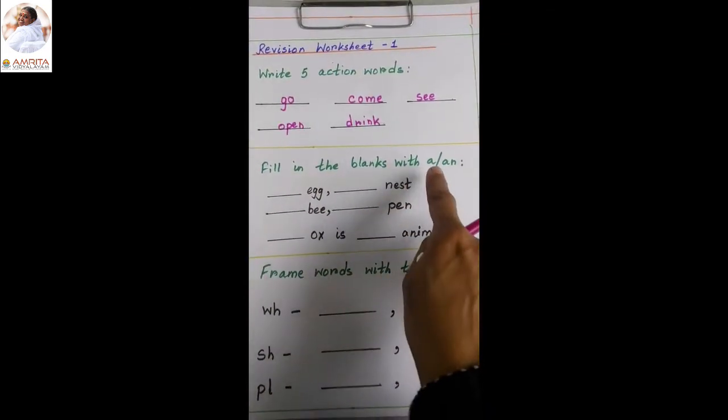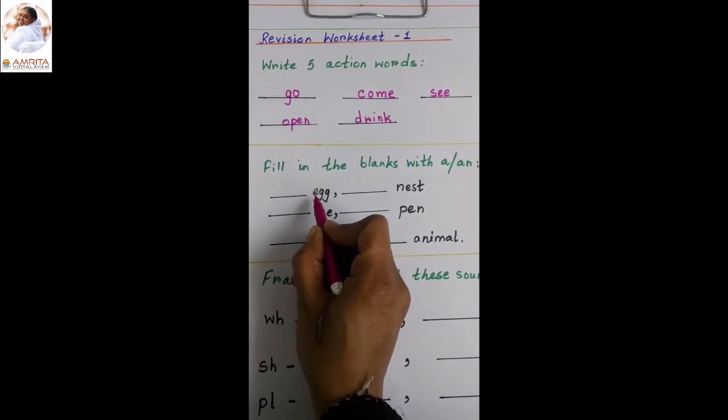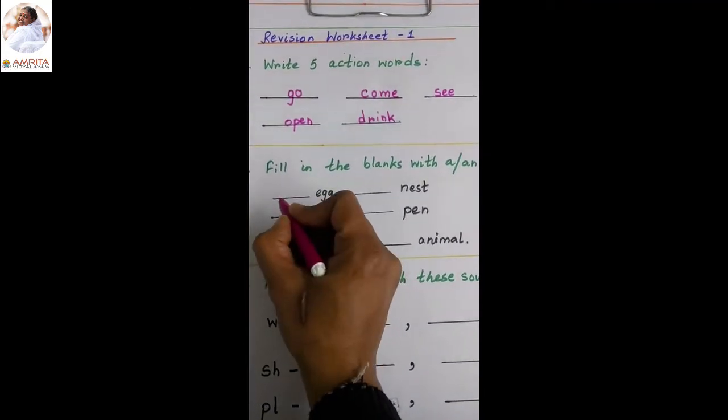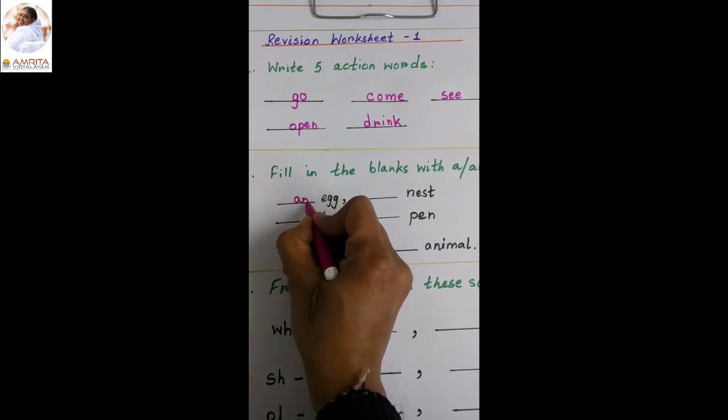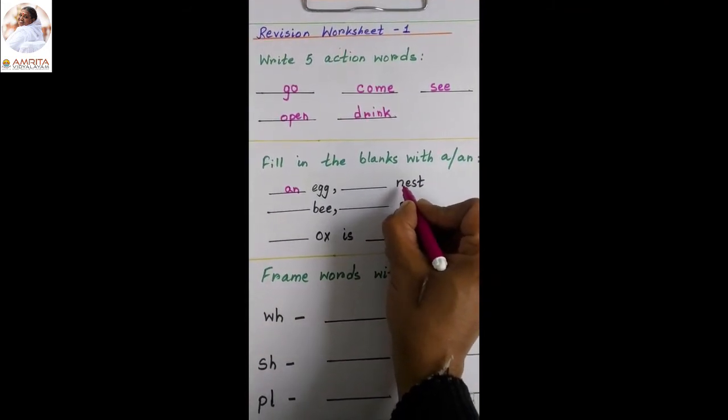Next is filling the blanks with A or AN. Dash egg. So the word egg is starting with E. So what will we write? A-N, an egg. N-E-S-T nest. Nest is starting with N consonant.